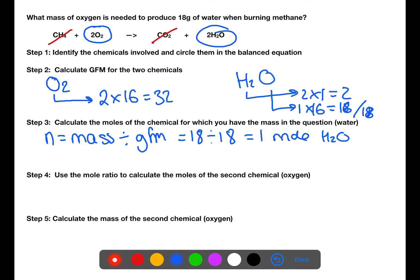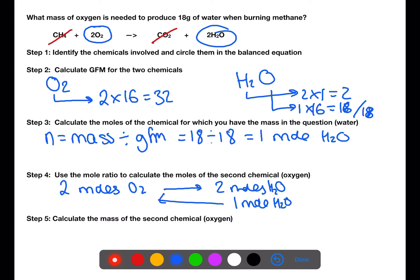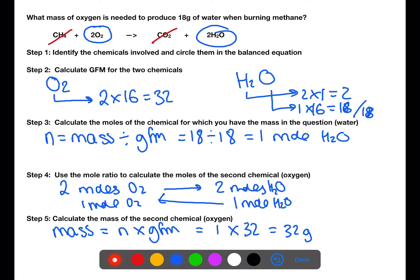Now we're going to use the balanced equation to find the number of moles of oxygen that would be required to produce this number of moles of water. If you have two moles of water, you require two moles of oxygen — this is a one to one ratio. Therefore to produce one mole of water you would need one mole of oxygen. Using this number of moles of oxygen and the gram formula mass from step 2, we're able to calculate the mass of oxygen required. This is 32 grams.